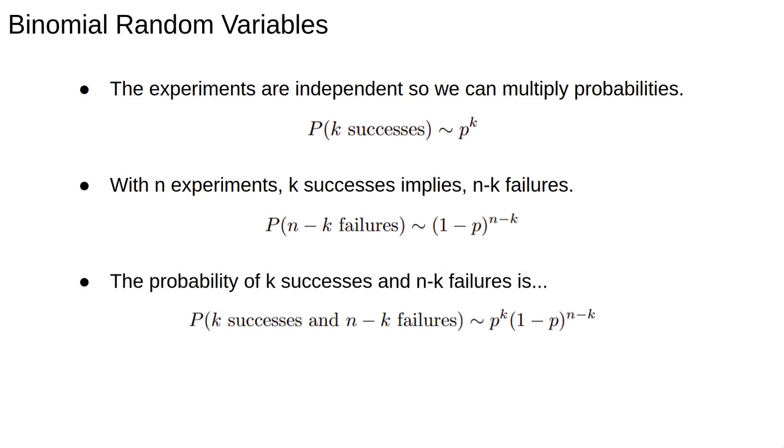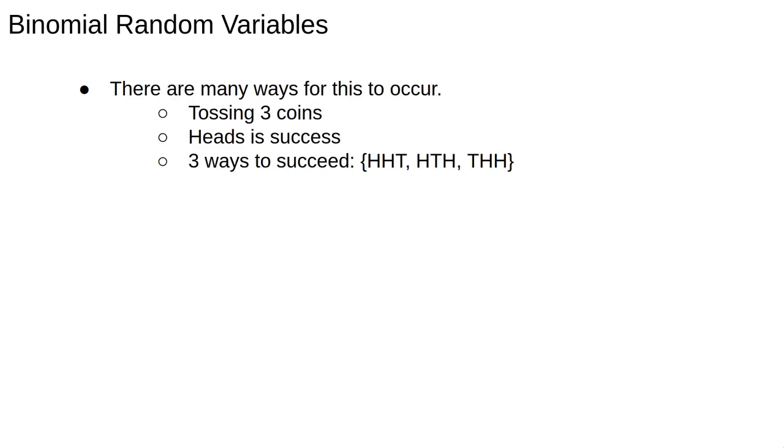So in our experiment the probability of k successes and n minus k failures is the product of these two probabilities or at least it's partly right. We have to account for the fact that there are many ways for k successes and n minus k failures to occur.